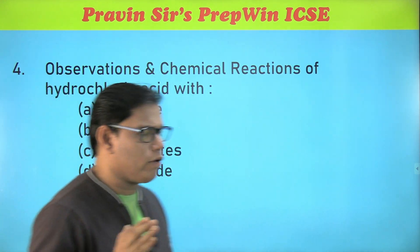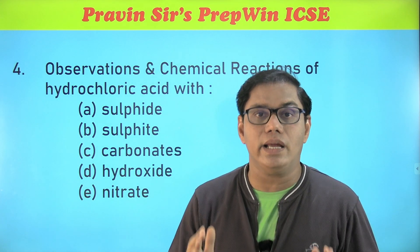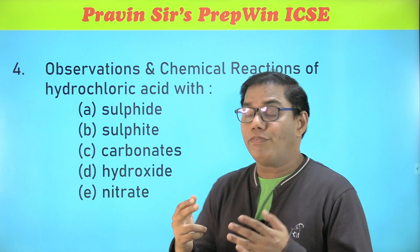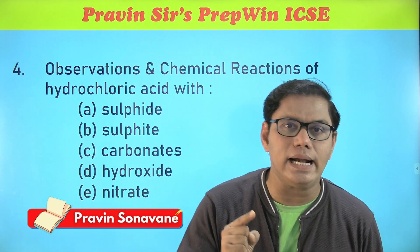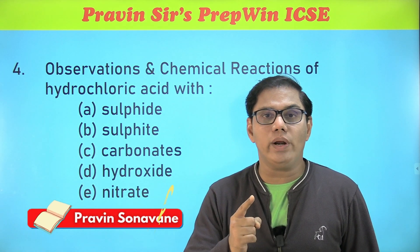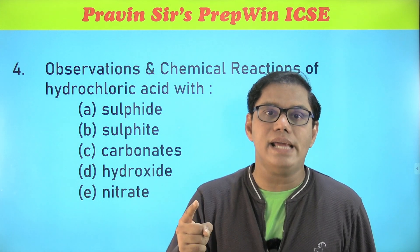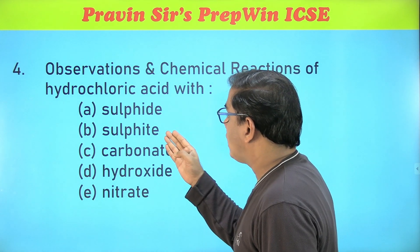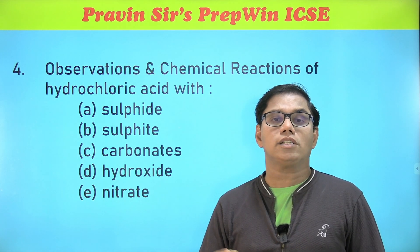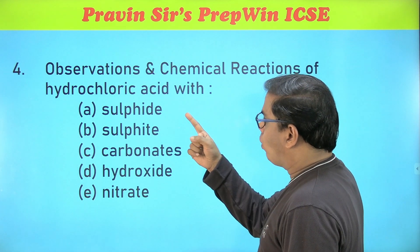Prediction number four — very very very important. Without these chemical reactions and observations, your chemistry paper is incomplete. What happens when you react hydrochloric acid with sulfide — note there is only one letter difference between sulfide and sulfite. When you react hydrochloric acid with metal sulfide, you get a gas which gives out a rotten egg smell — yes, hydrogen sulfide gas. With metal sulfite, hydrochloric acid produces SO₂ gas, sulfur dioxide, which turns potassium dichromate from orange to green color. Then reactions of hydrochloric acid with carbonates, hydroxide, and nitrite — all five questions are equally important.